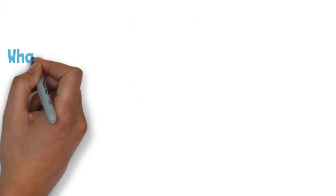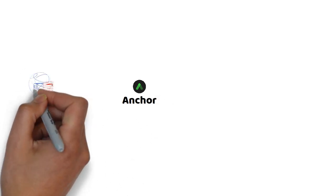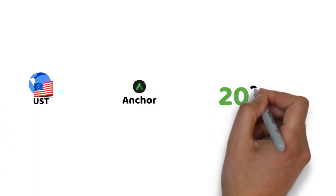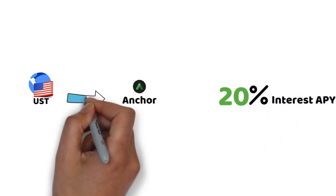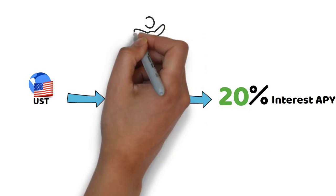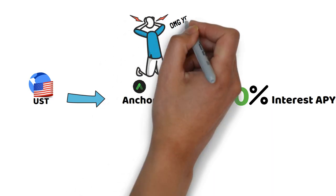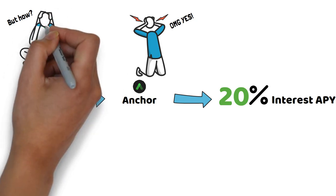So what is Pylon? Before we go there, let me tell you about a protocol called Anchor. Anchor is a protocol that allows your UST stablecoin to earn 20% interest. Simply deposit UST into Anchor and you start earning 20%.